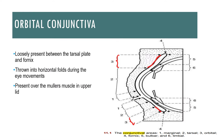The next part of the palpebral conjunctiva is the orbital conjunctiva. Beyond the tarsal plate we have the orbital septum until the fornix area. The conjunctiva covering the area where the orbital septum and Müller's muscle are present in the upper lid — and the retractors in the lower lid — is called the orbital conjunctiva. It is the part of conjunctiva present between the tarsal plate and the fornix. It is very loosely present compared to the tarsal conjunctiva, and during eye movements it is thrown into horizontal folds.